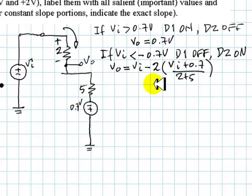Let me clean it up a little bit. This would be 1 minus 2 seventh, right? That is 5 seventh of VI. And this part would be negative 2 times 0.7, negative 1.4 divided by 7, that is negative 0.2. That is the expression of the output voltage as a function of the input voltage when the input voltage is less than negative 0.7.